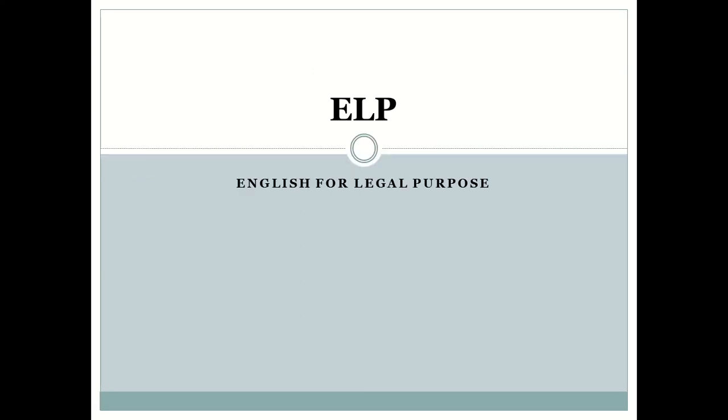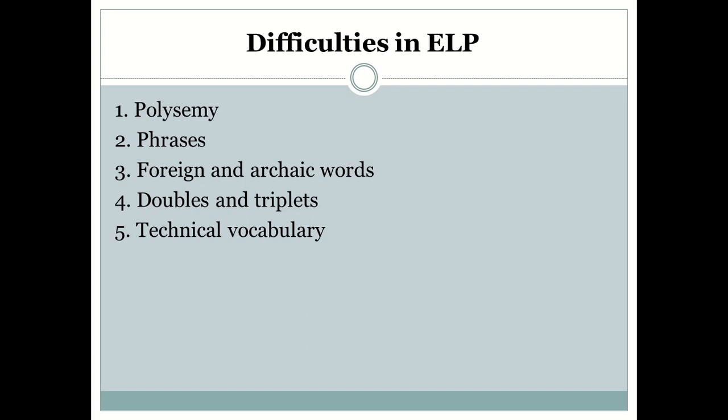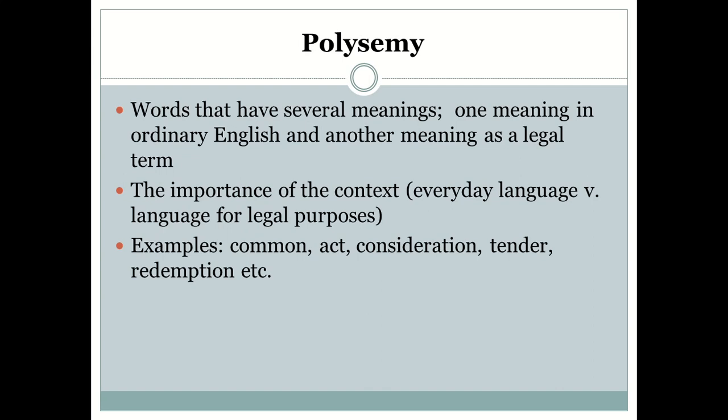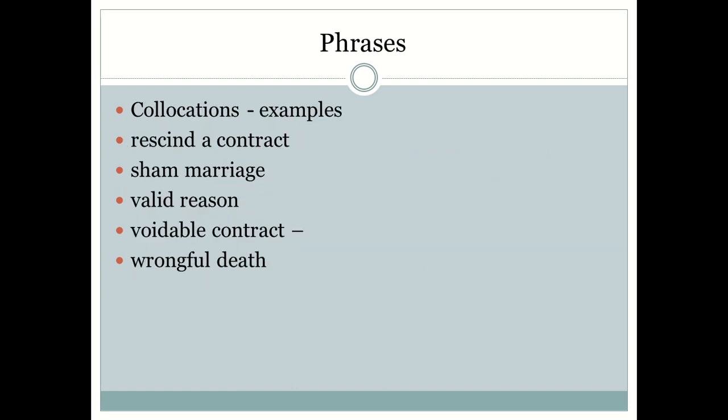ELP — English for Legal Purposes — is an instance of ESP. Difficulties in ELP include polysemy, phrases, foreign and archaic words, doublets and triplets, and technical vocabulary. Polysemy refers to words having several meanings — one in ordinary English and another as a legal term. The importance of context is critical — text in context is essential. Examples of everyday words used as legal terms include: act, consideration, tender, and redeem.